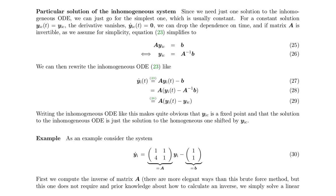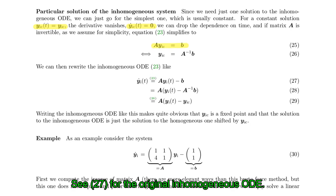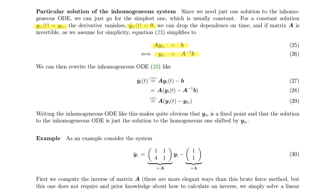When looking for a constant solution — a solution that does not depend on time — the time derivative vanishes and the differential equation simplifies. Because y-dot disappears, this equation, if A is invertible, can simply be rearranged by multiplying A-inverse on both sides, and we immediately have a constant solution to the inhomogeneous system.